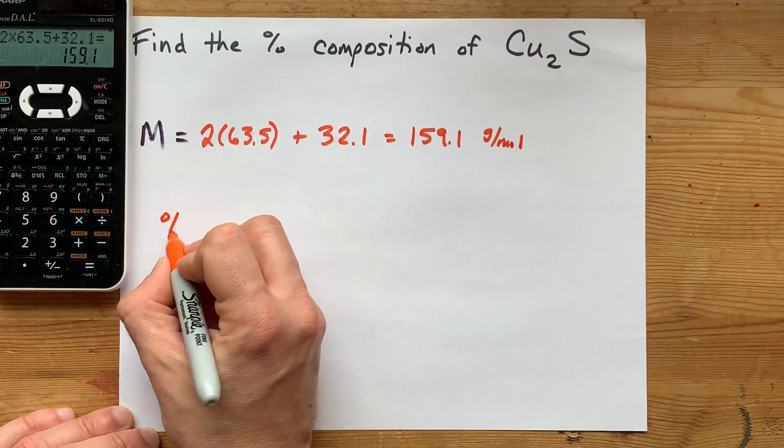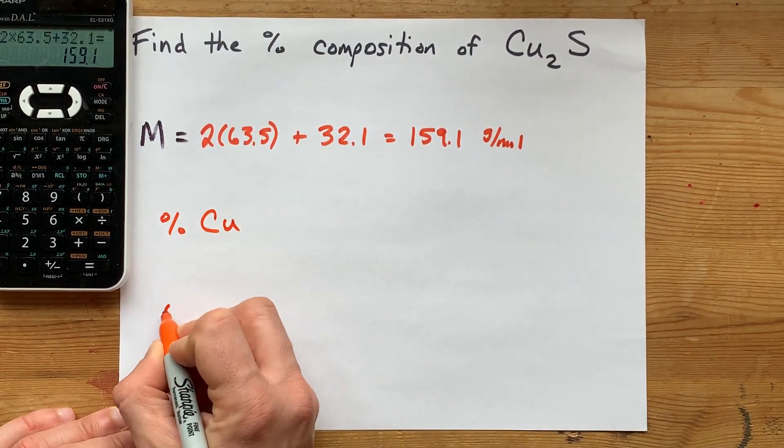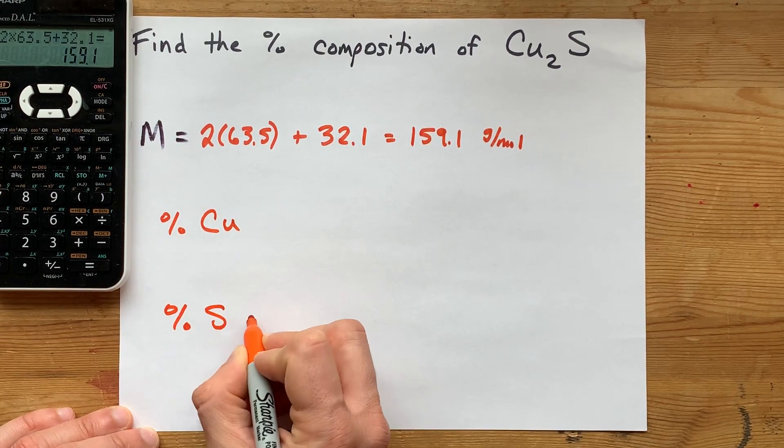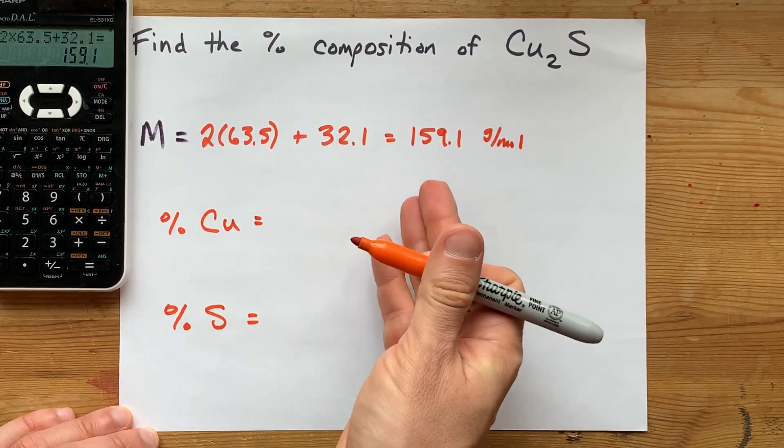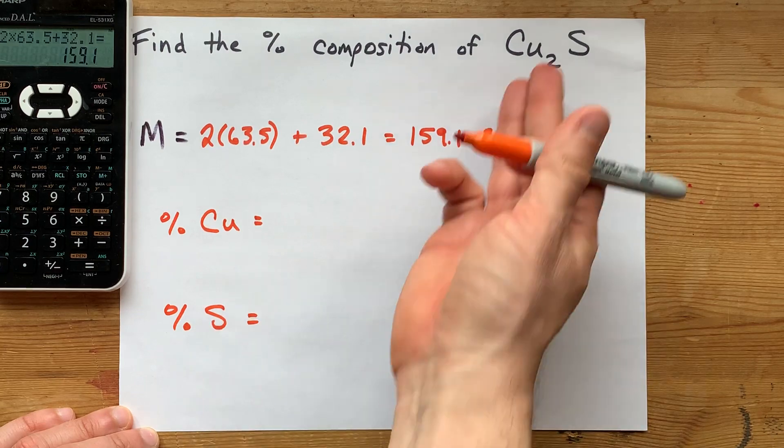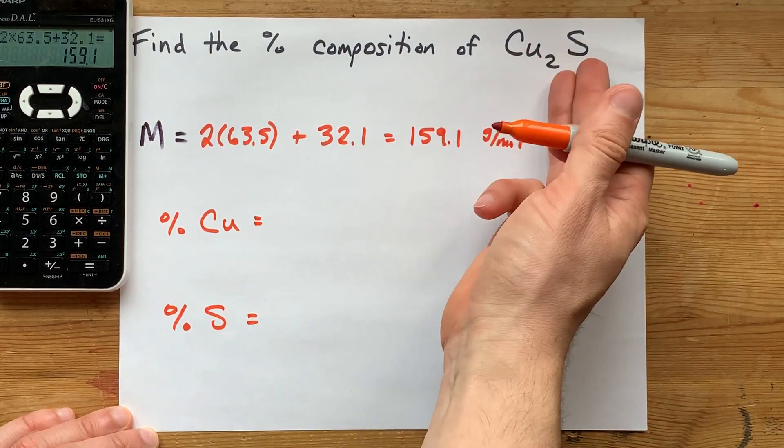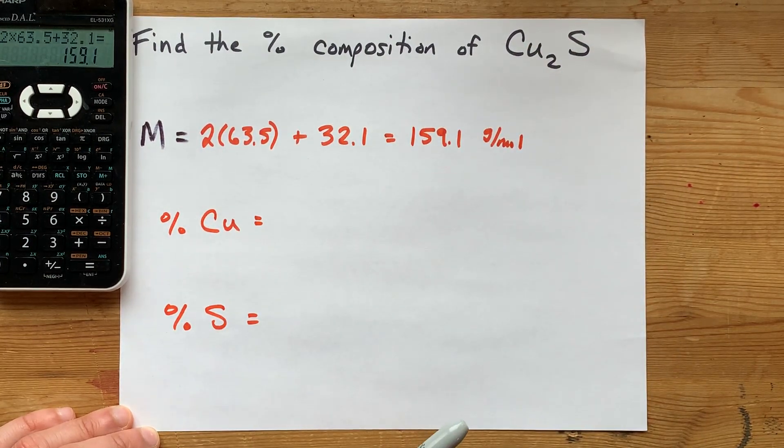Now, percent composition is showing how much of the mass was contributed by each of the elements inside of it. There's only copper and sulfur here, so those are the only two I'm going to write.